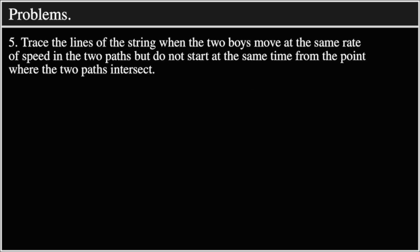Problem 5: Trace the lines of the string when the two boys move at the same rate of speed in the two paths, but do not start at the same time from the point where the two paths intersect.